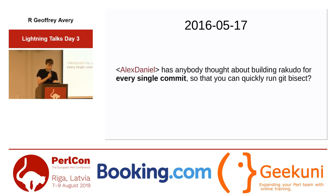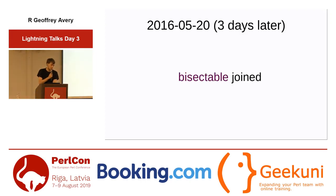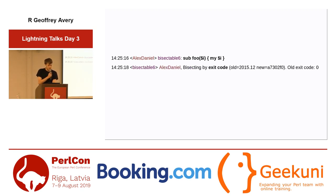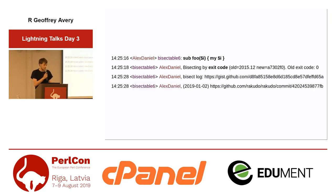In 2016, I wondered if anybody had thought about building Rakudo for every single commit in the git history. Long story short, I implemented it, and three days later the bot joined the IRC channel. Today it works like this: you give it a piece of code, it figures out which bisection strategy to use — in this case the exit code differs, so it uses that — and ten seconds later you get the result, along with the bisect log.